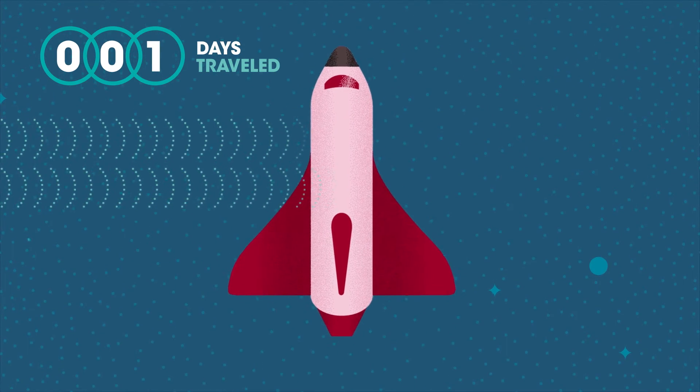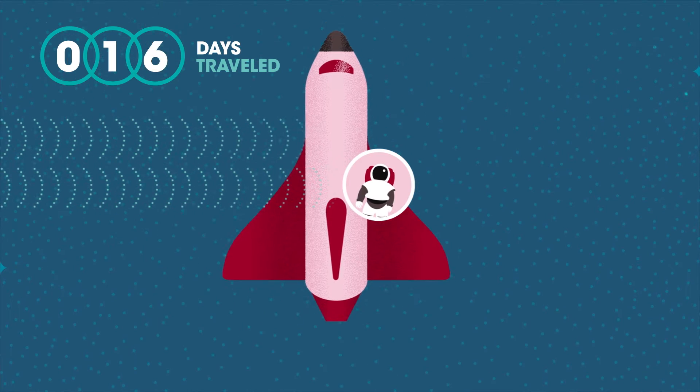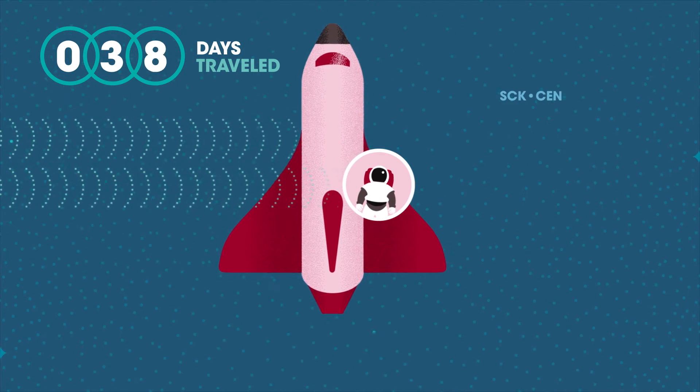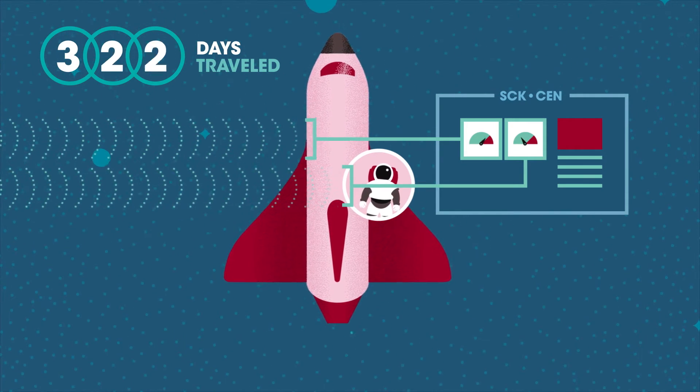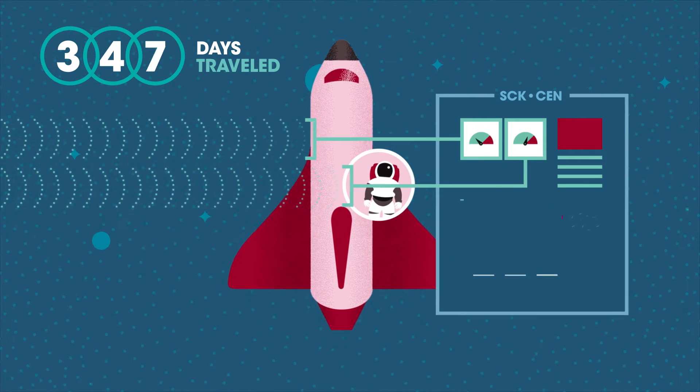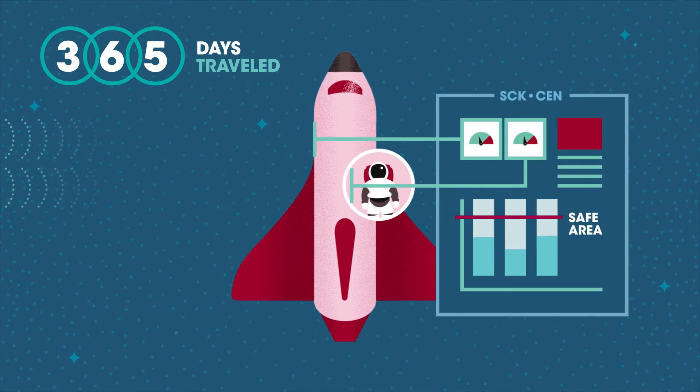To measure the radiation levels astronauts and the ISS are exposed to, the Belgian Nuclear Research Centre, SCK-CEN, has developed dosimeters. They're used inside and outside spacecraft during a mission, because protection against the harmful effects of radiation is key when travelling to the Red Planet.